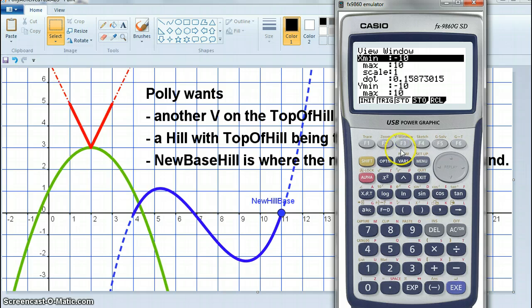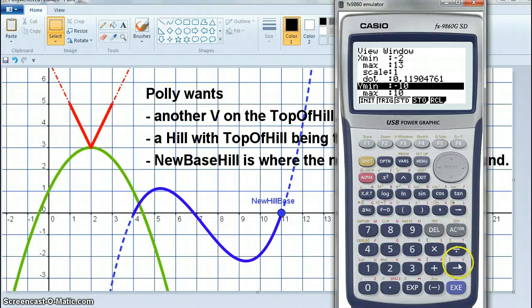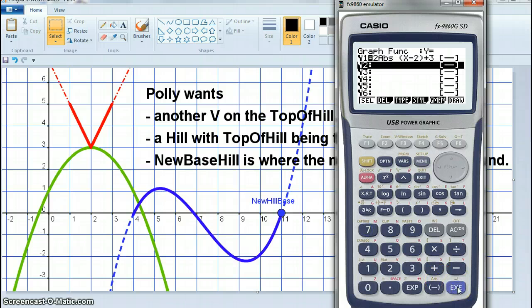I want to have my X minimum to be negative 2, my X max to be 13, because that's what I can see, my Y minimum to be negative 3, and my Y max to be 7. So then I'm actually looking at something that kind of matches that.